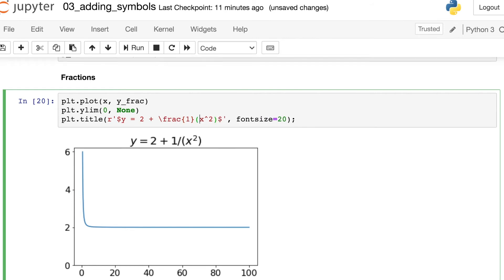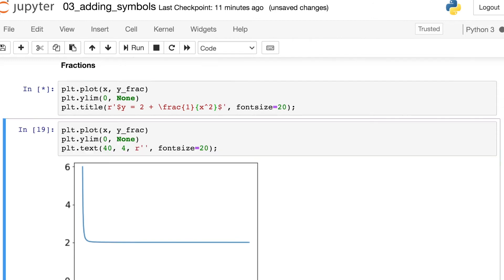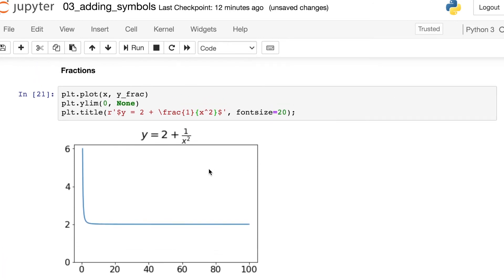then we surround our numerator by a set of curly braces, and then immediately surround our denominator by a set of curly braces. This will indicate to TeX that we want to create a fraction and print one quantity on top of the other.